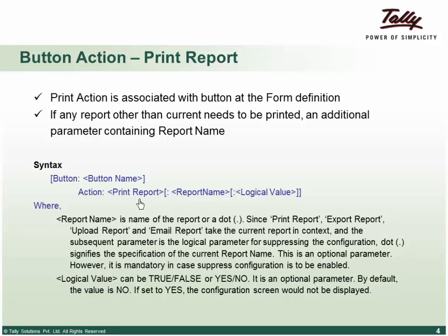At button level, the action is print report. Depending on the kind of report you want to generate, a print report action basically prints the current report. It looks for a print attribute at your form level, and in case the print attribute is not available at the form definition, it prints the current report as it is.